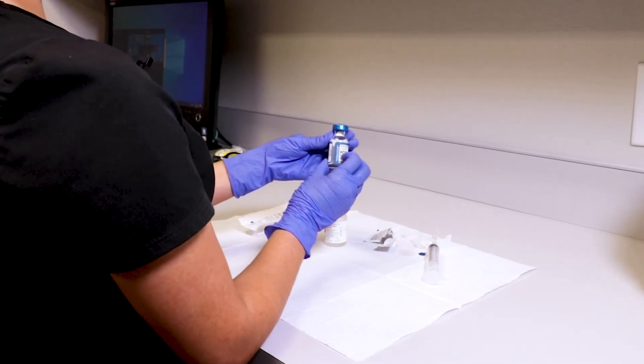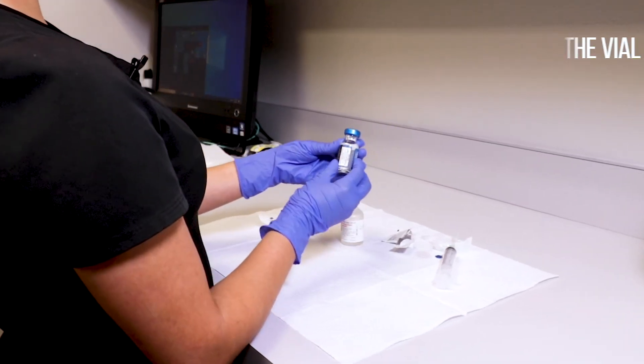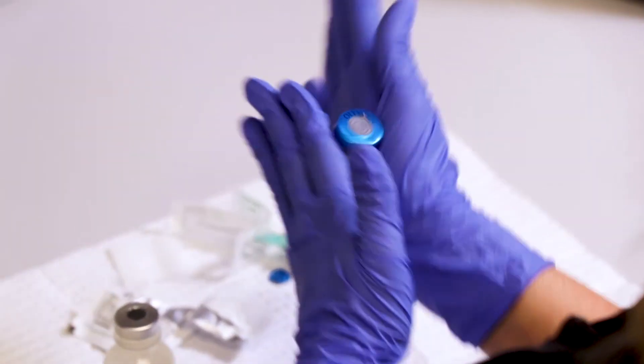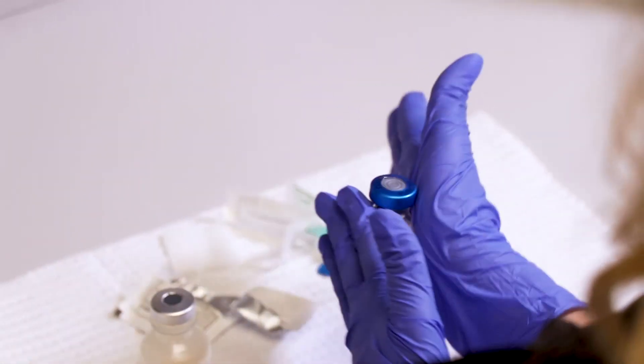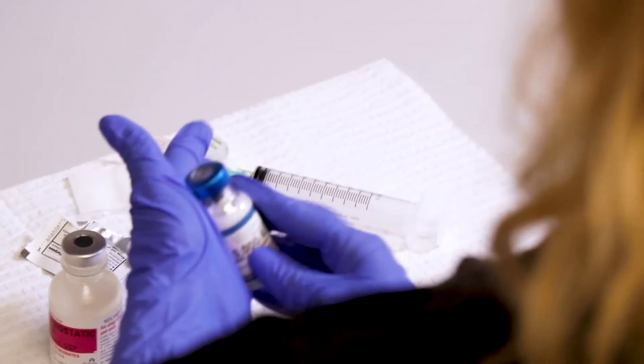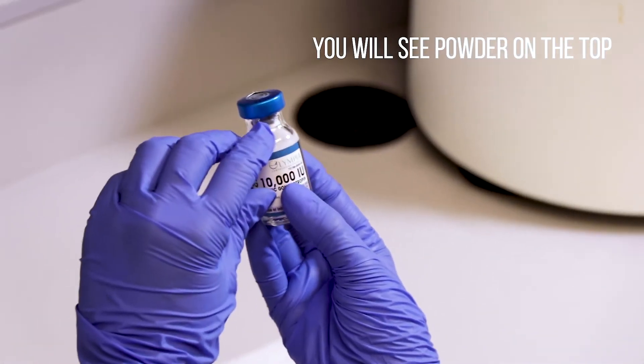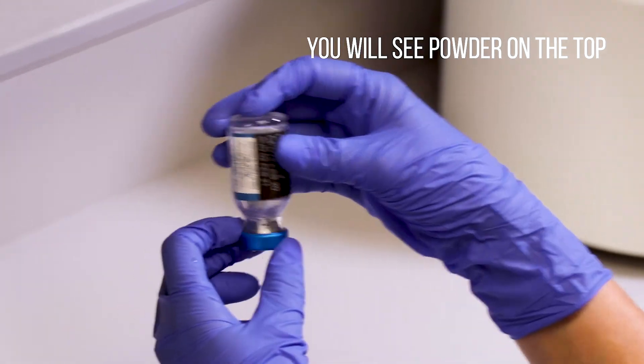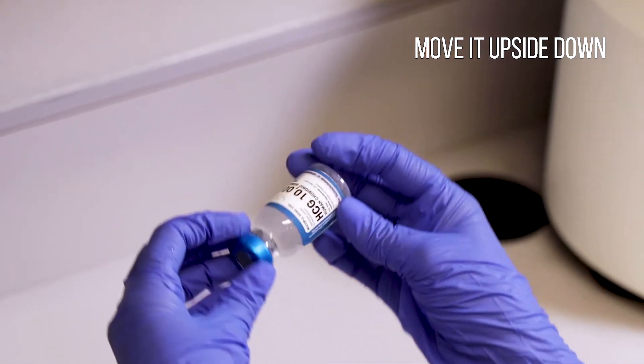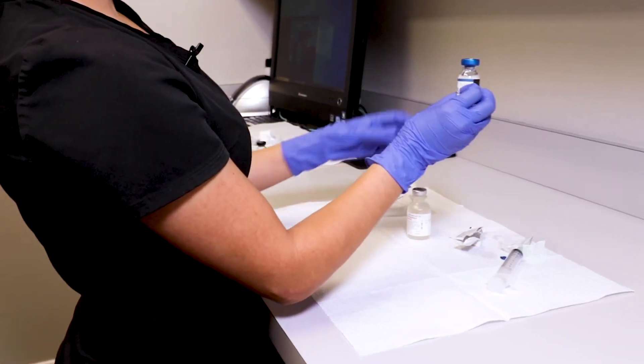Once you have the bacteriostatic water in the vial, please do not shake the vial. Simply put it in the palm of your hands and go like this. Sometimes you will see some powder on the top, just simply move it upside down and your vial is reconstituted.